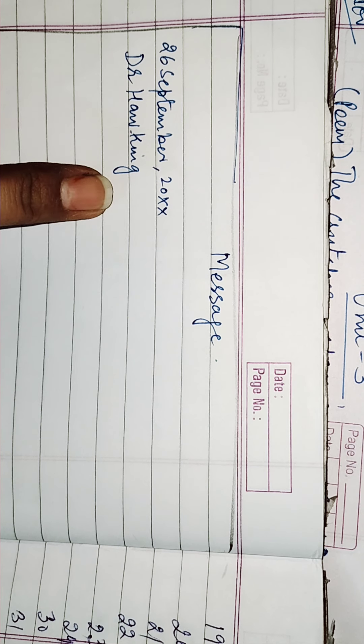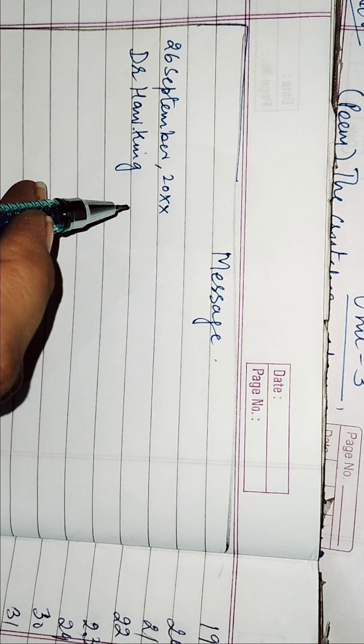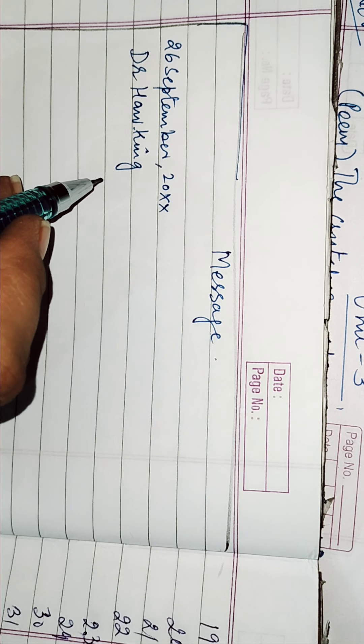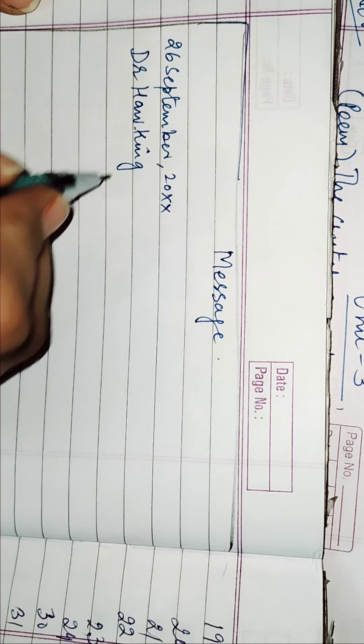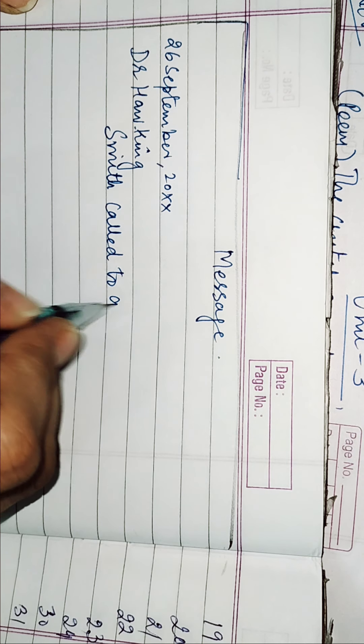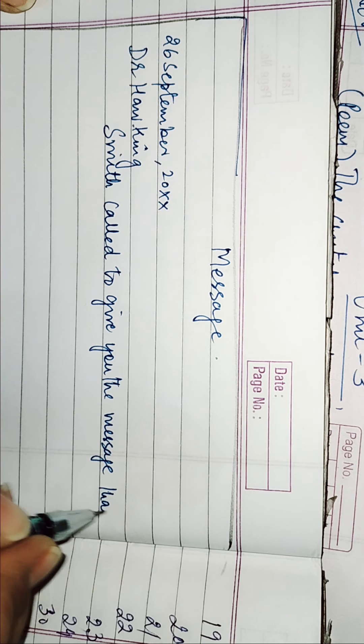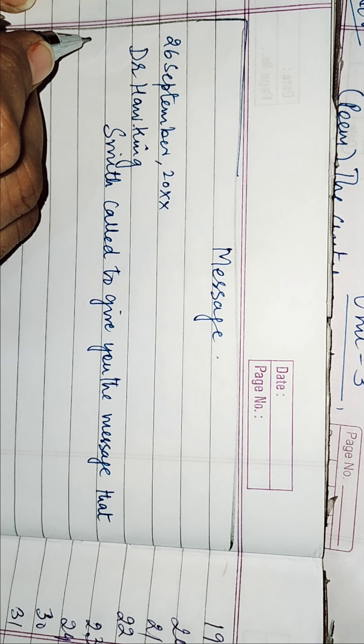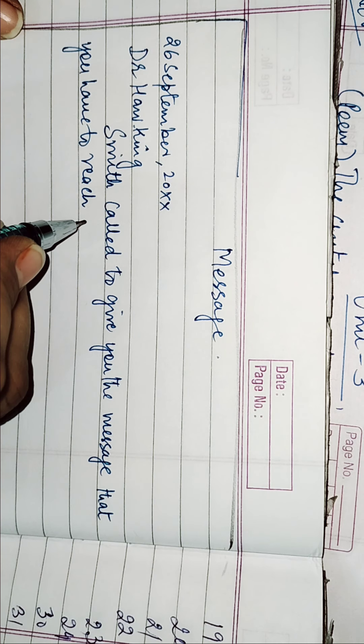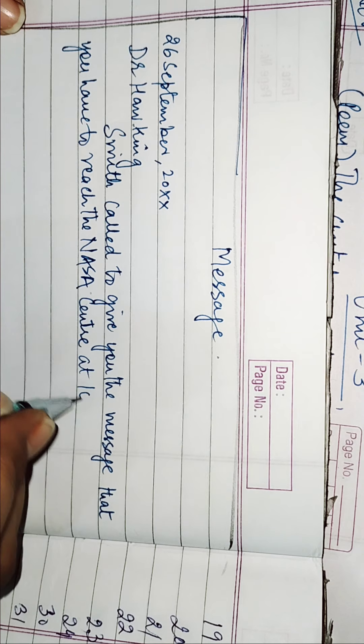Because, Smith is his assistant. So, he will... Obviously, he will call him like this only, Dr. Hawking's. Smith called you to reach NASA. Smith has called you. You will start writing like... Smith called to give you the message. The message to give you the message. The message that you have to reach the NASA center at 10, 10 a.m. Tomorrow... For a meeting...